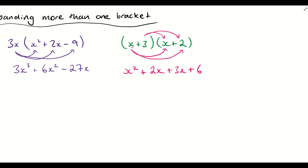So we've got these funky-looking crab claws — two going underneath and two going over the top. The important thing is that everything from one bracket goes into everything from the other bracket. We end up with x² + 2x + 3x + 6, which simplifies to x² + 5x + 6, just by grouping the 2x and 3x together.